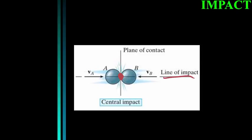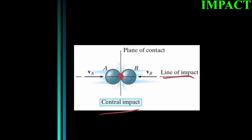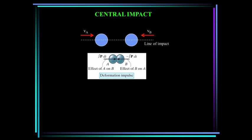The line of impact is defined as through the mass centers of the colliding particles. In general, there are two types of impacts: central impact and oblique impact. Central impact occurs when the incoming velocities are along the line of impact. Oblique impact occurs when the directions of the incoming velocities are oblique, or not parallel, to the line of impact.